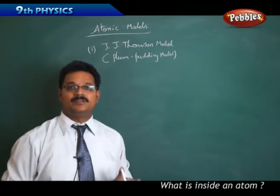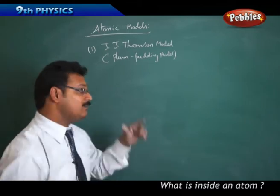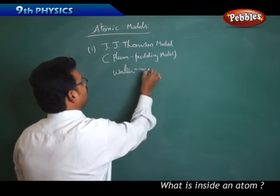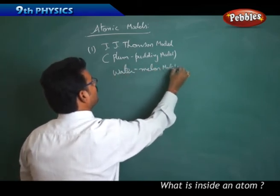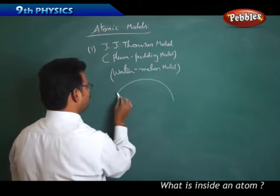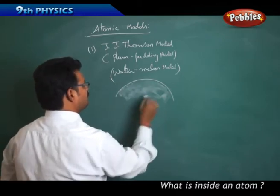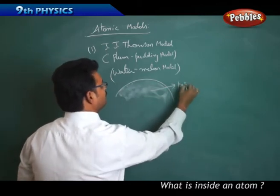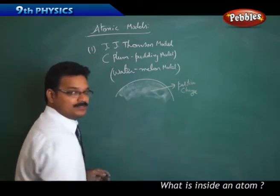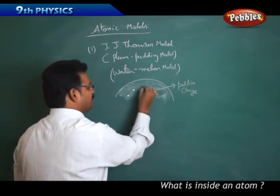If you don't understand what is plum pudding, I will tell you another example like watermelon model. In India we can say it is watermelon model. If you see the watermelon, the red part of the watermelon is positive charge.